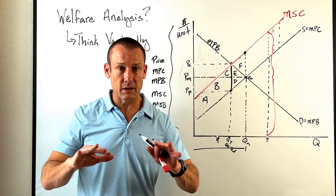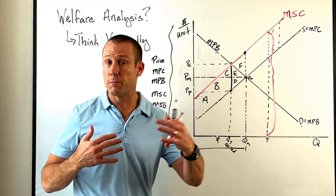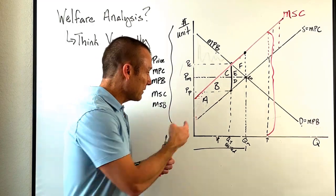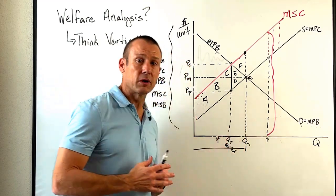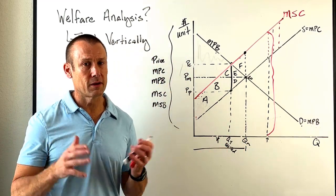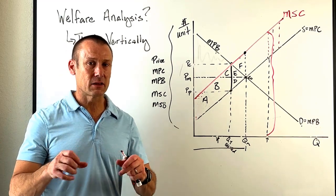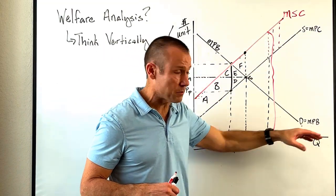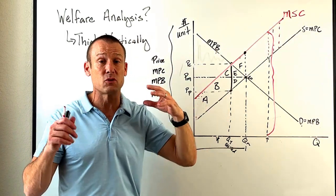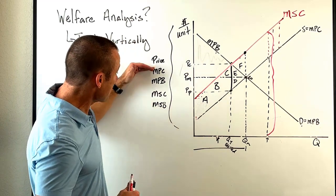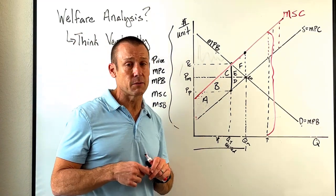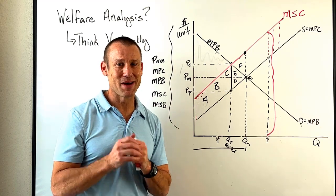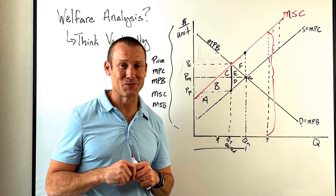All we're ever doing is finding the vertical distance that matters and then applying it across the output level — government revenue, harm or benefit to third parties, consumer surplus, producer surplus. When you see this curve as MPC, think vertically. When you see it as MPB, think vertically. Same for MSC and MSB — those are all measured vertically as the dependent variable. I really think once you get this, it makes everything easier. Maybe watch it twice. Talk to you in the next video.